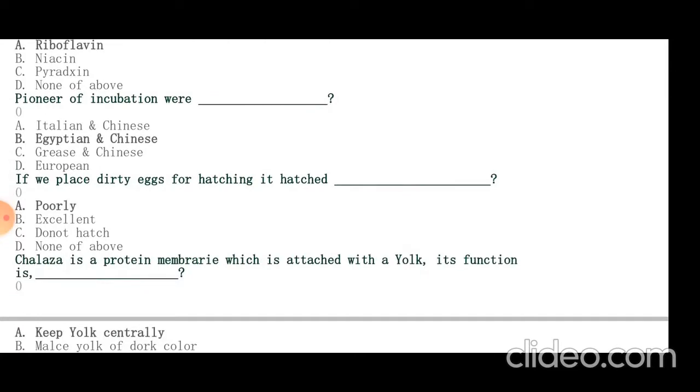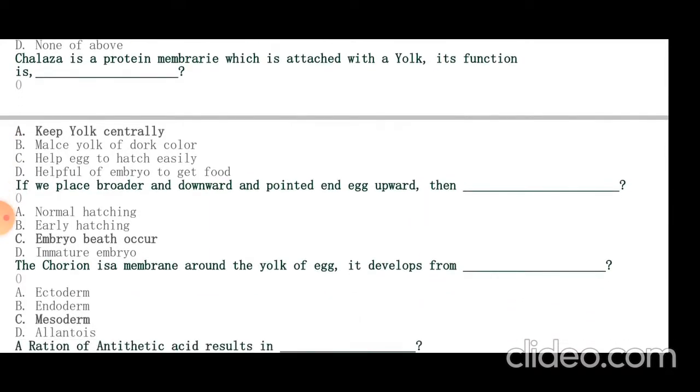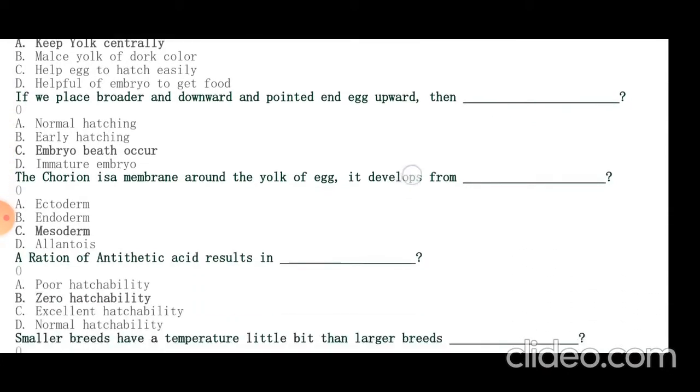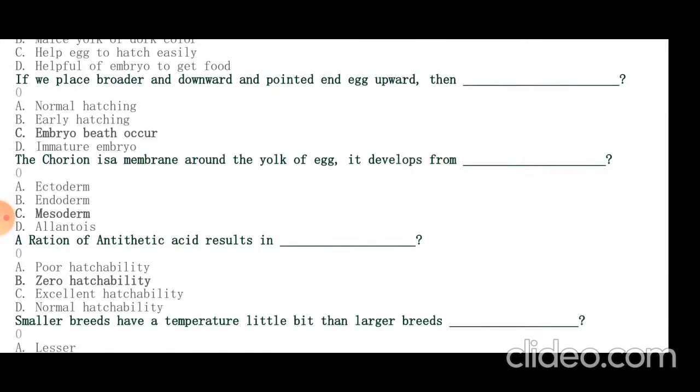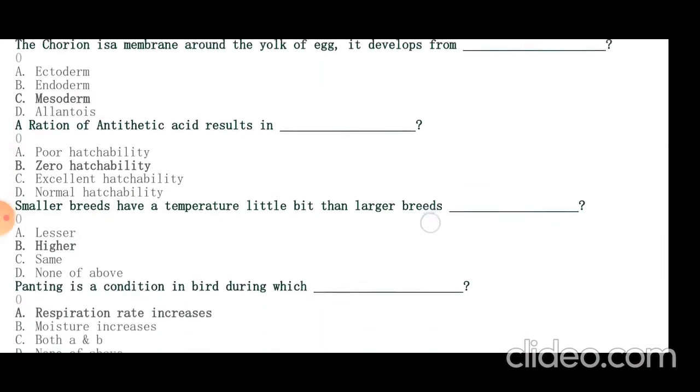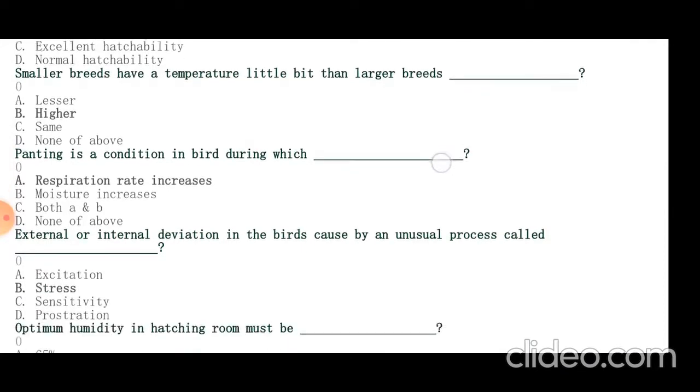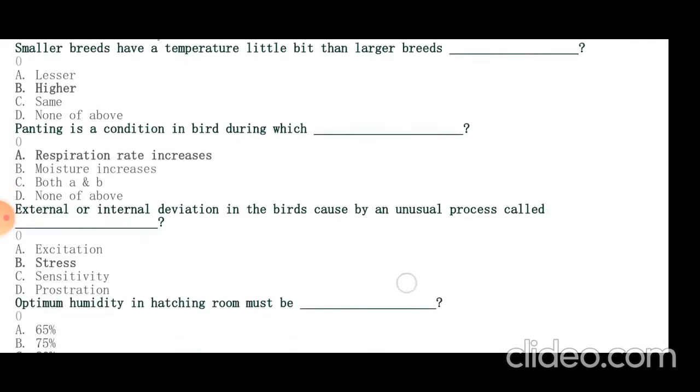Chalaza is a protein membrane which is attached with yolk. Its function is to keep yolk centrally. If we place broader end downward and pointed end upward, embryo death will occur. Chorion is a membrane around the yolk of eggs that develops from mesoderm. Ration deficient in pantothenic acid results in zero hatchability. Smaller breeds have temperature a little bit higher than larger breeds. Panting is a condition in birds during which respiration rate increases. External or internal deviation in birds caused by unusual processes is called stress.